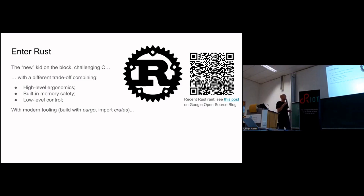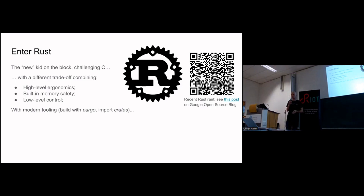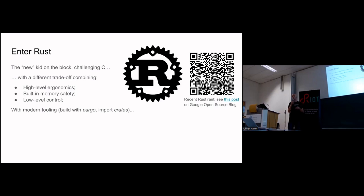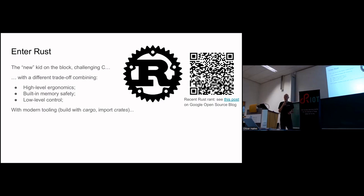In a nutshell, Rust takes a very different approach compared to C, with high-level ergonomics and built-in memory safety. The compiler actually bugs you a lot before you're able to get something to compile, but then you have many whole categories of errors that just don't show up anymore — with a level of low-level performance that's supposedly similar to C, and modern tooling.